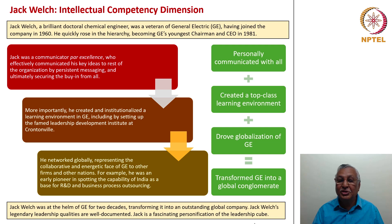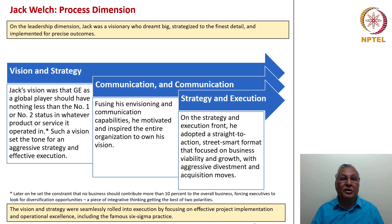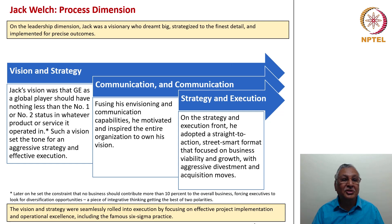He personally communicated with all, created a top-class learning environment, drove globalization of GE and turned it into a global conglomerate. The process dimension of Jack Welch unravels as follows: he was a visionary who dreamt big, a strategist to the finest detail and an implementer for precise outcomes. Jack's vision was that GE as a global player should have nothing less than the number one or number two status in whatever product or service it operated in. Such a vision set the tone for an aggressive strategy and effective execution based on scale.